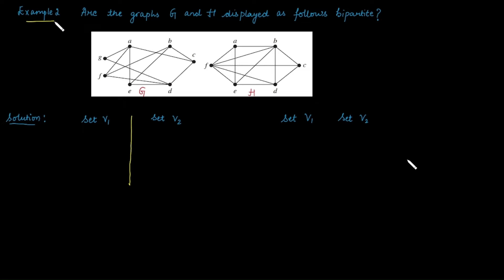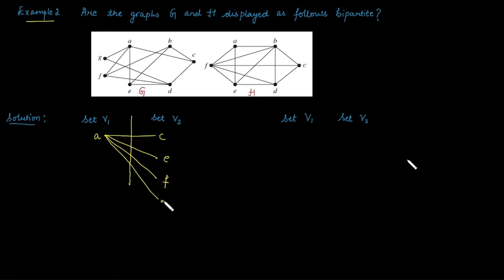For the second example, we need to identify whether graphs G and H are bipartite. For graph G, take vertex A in set V1. The adjacent vertices of A are C, E, F, and G — place them in set V2. Now take vertex C from V2. C is adjacent to B, A, and D. A is already in the opposite set, so place B and D in the set opposite to C, which is V1.